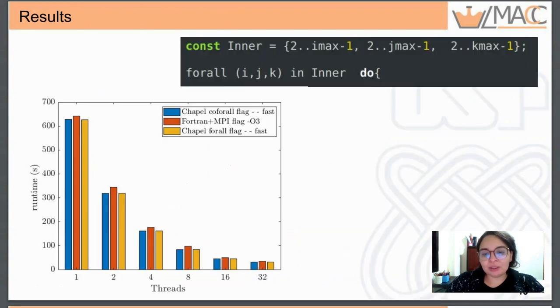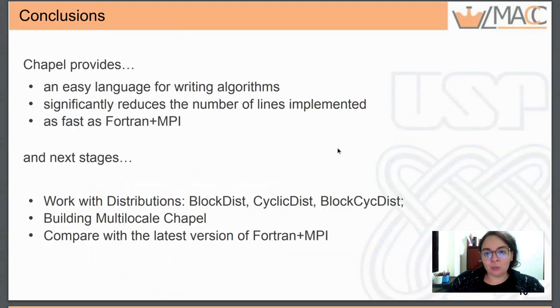I like Chapel because I can use forall loops and I don't need to think about creating domain decomposition or process communication. The results with Fortran in yellow bars and coforall in blue bars are similar in single locale or one node.